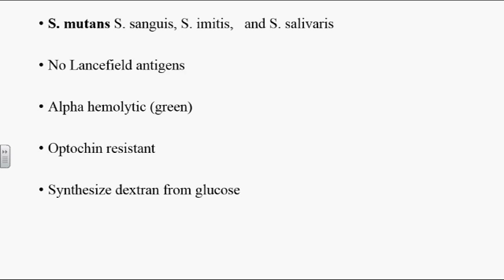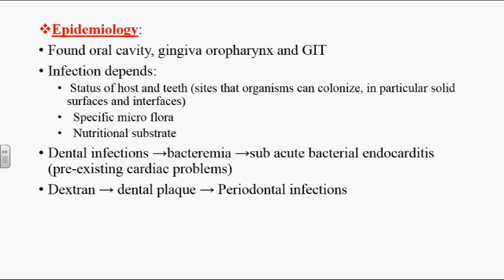Viridans streptococci always synthesize dextran from glucose. Dextran is a carbohydrate that helps these organisms in adherence — it acts like a glue, helping the organism attach to host cells or host tissues.